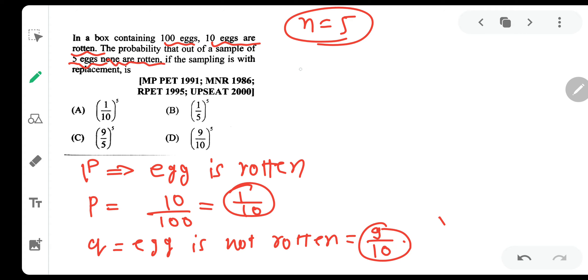They are saying none are rotten. None are rotten means no egg is rotten. If P is the success, then Q is the failure. It means you want success how many number of times? You want success depending upon what they have asked. None are rotten. It means you want failure.